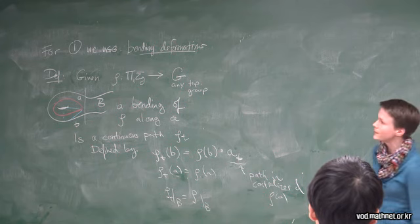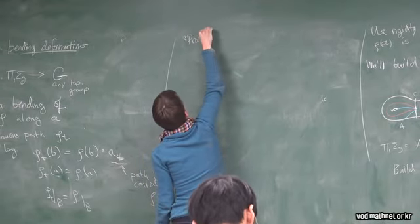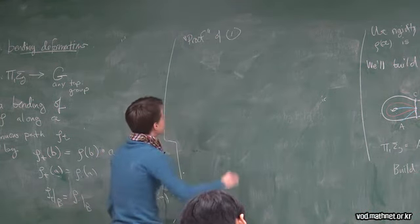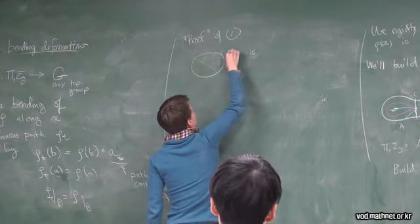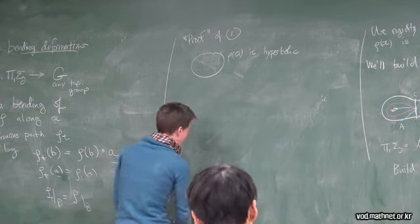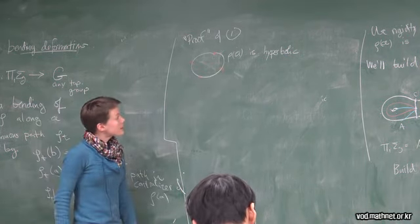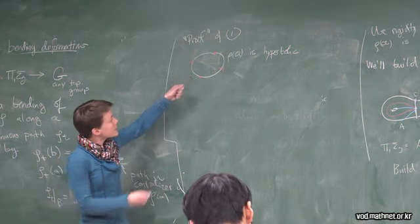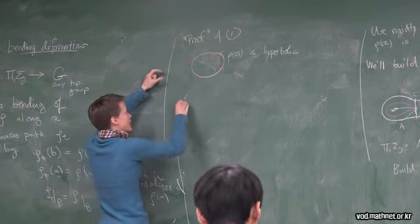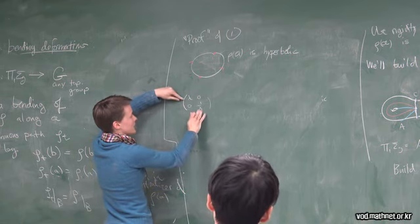Let me just give you the heuristic of the proof of one. Proof idea of one. Is, I know that A, or Rho of A is hyperbolic by assumption, so it's got an attracting fixed point and a repelling fixed point in this kind of dynamics. It sits inside a one-parameter family. Anything like this sits inside, actually, a one-parameter family of homeomorphisms of the circle.